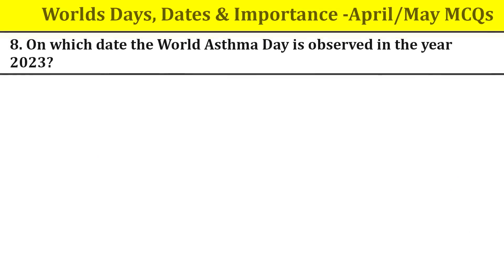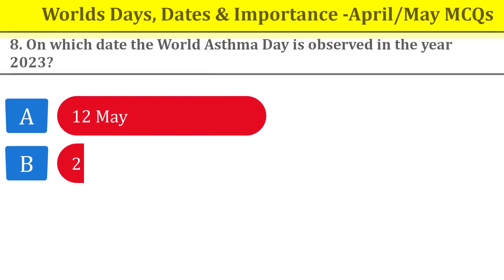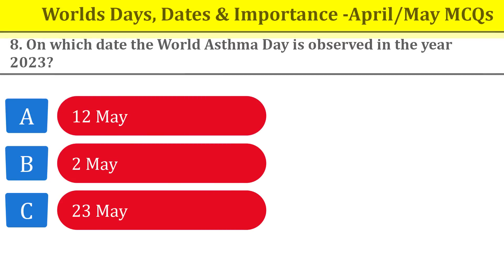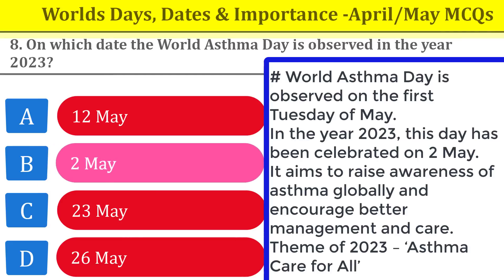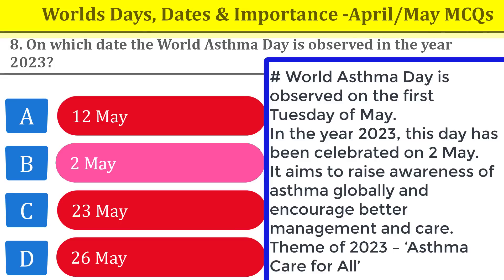Question number eight: on which date is World Asthma Day observed in 2023? It is observed on 2nd May. This day aims to raise awareness of asthma globally and encourage better management and care. The theme of 2023 is 'Asthma Care for All.' Dear students, I am also providing the theme of each particular day — go through it and revise it.